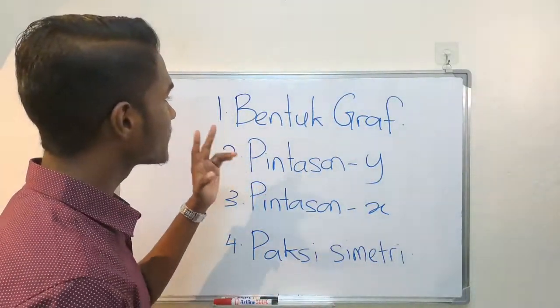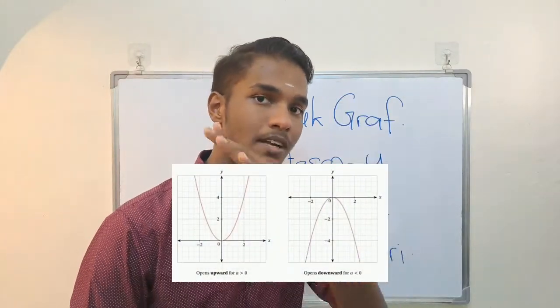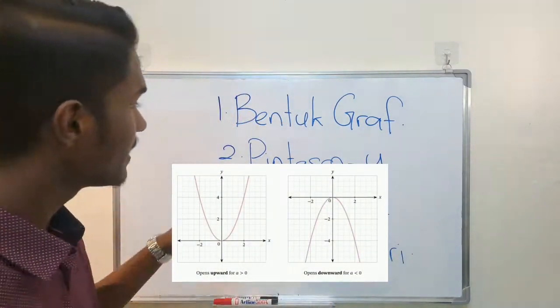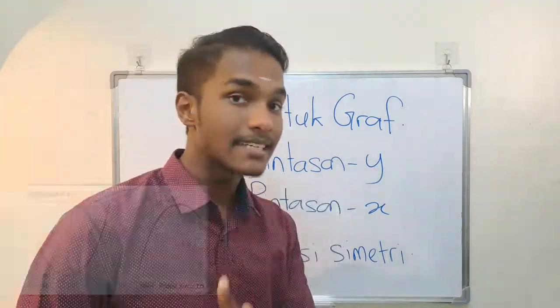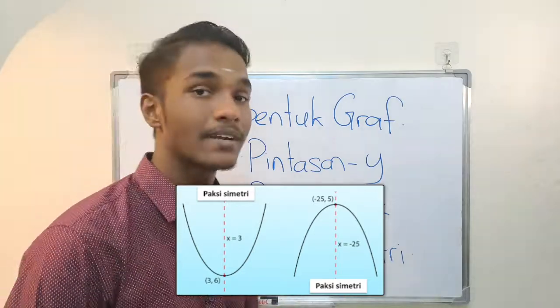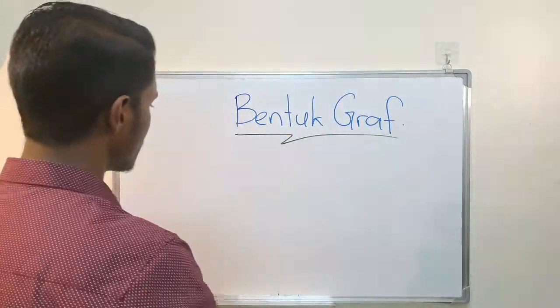The first step is the graph. The graph is the shape of the graph. This is the y-intercept, the x-intercept, and also the symmetrical line. The graph is quadratic.